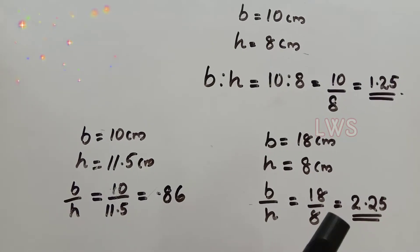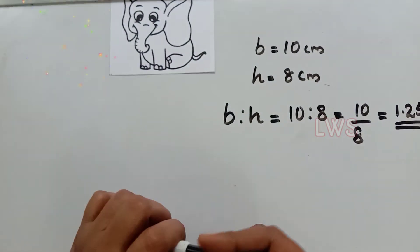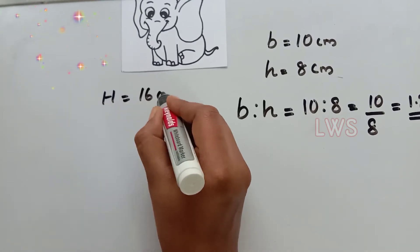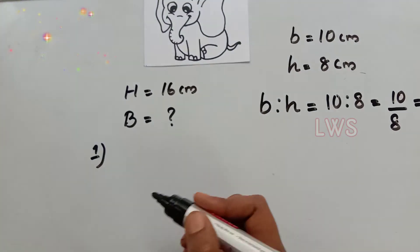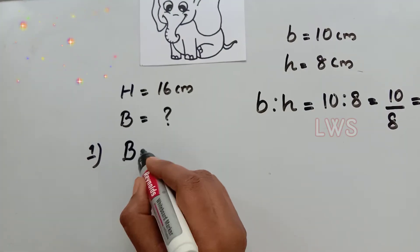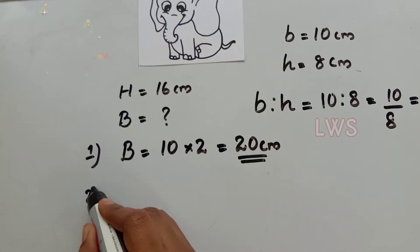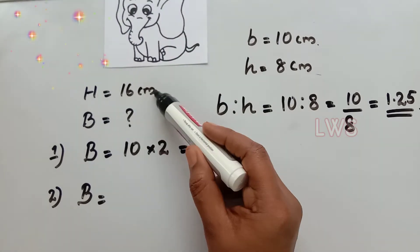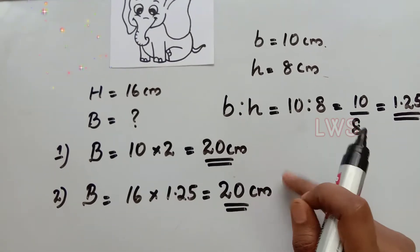Now we can check whether we can draw this picture without any distortions but in an enlarged size. I am going to draw a picture of double size. The height of our picture is 8 cm, so I take the height of the new picture as 16 cm. To get the new base, we use two methods. First, since we multiplied the old height by 2, we do the same for the base: new base equals old base times 2, which is 20 cm. Second method: since base equals 1.25 times the height, new base equals 1.25 times 16, which is again 20 cm.